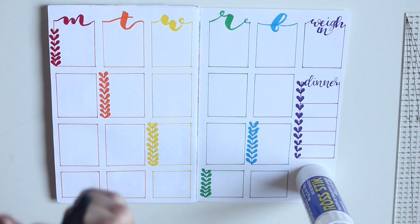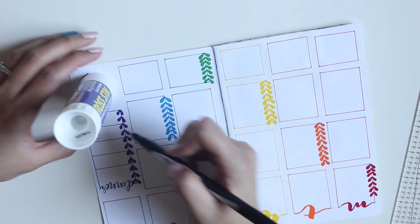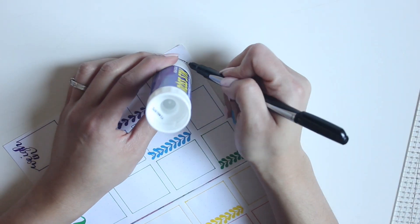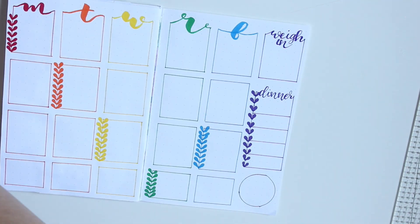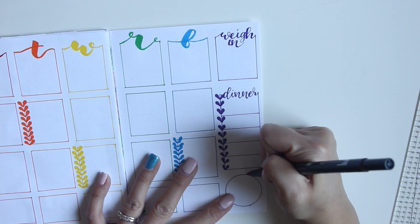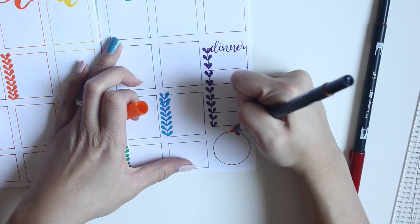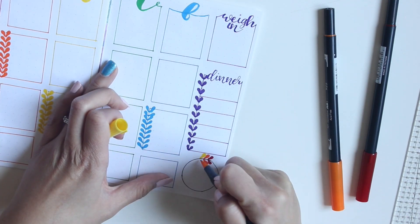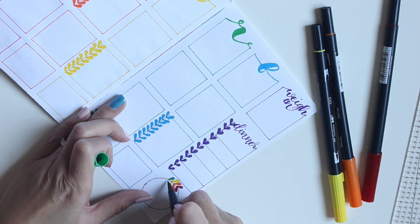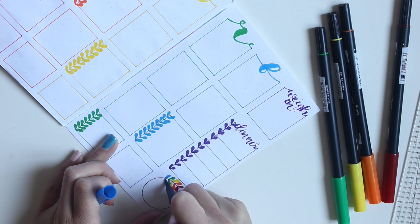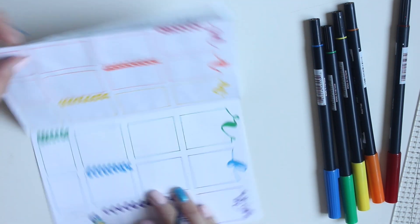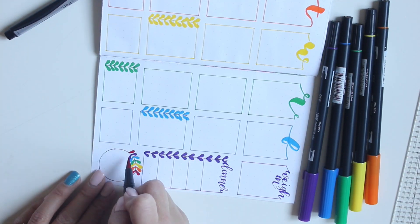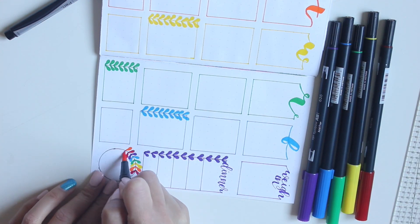And the thing with bullet journaling is that it doesn't have to be overly complicated. But for example, I'm using the bottom of a glue stick to draw out a circle, and then what I'm gonna do is do almost like a rainbow of leaves. And I apologize for how long this is gonna take in the video. You're just gonna see me switch between pens and go all the way around.